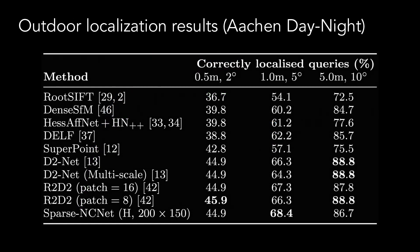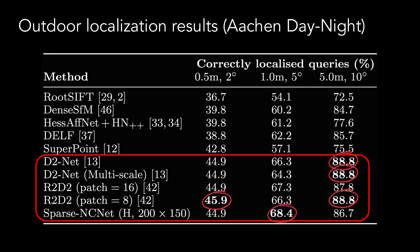Finally, we evaluated our method on the challenging Aachen Day-Night localization benchmark, which contains 98 nighttime queries that must be localized. In this case, Sparse NC-Net obtains a similar performance to the state-of-the-art methods, getting the largest number of localized queries for the 1-meter threshold and differing only in one or two correctly localized queries for the other cases.